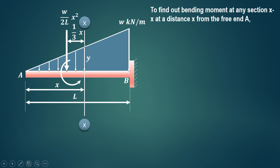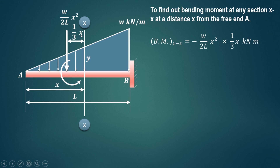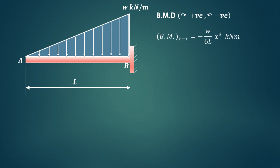For the triangular section, the centroid acts at a distance of base upon 3 from the section. The base for the smaller triangle is x, so the centroid is at one-third times x. Taking moment about section XX, the force is W upon 2L times x squared, and it produces an anti-clockwise moment, which is negative. The perpendicular distance is one-third times x, so the bending moment is minus W upon 6L times x cubed kilonewton-meter.